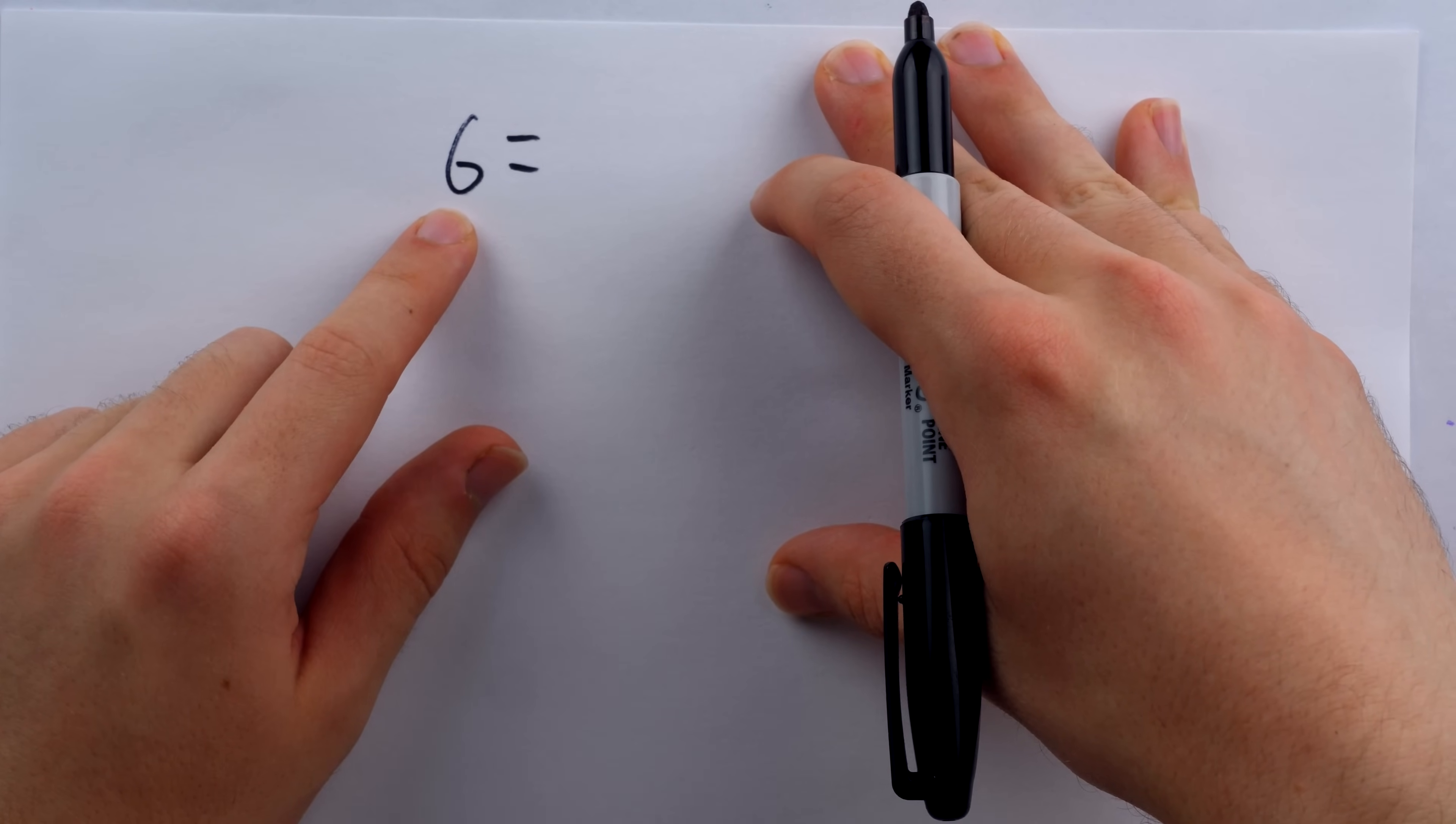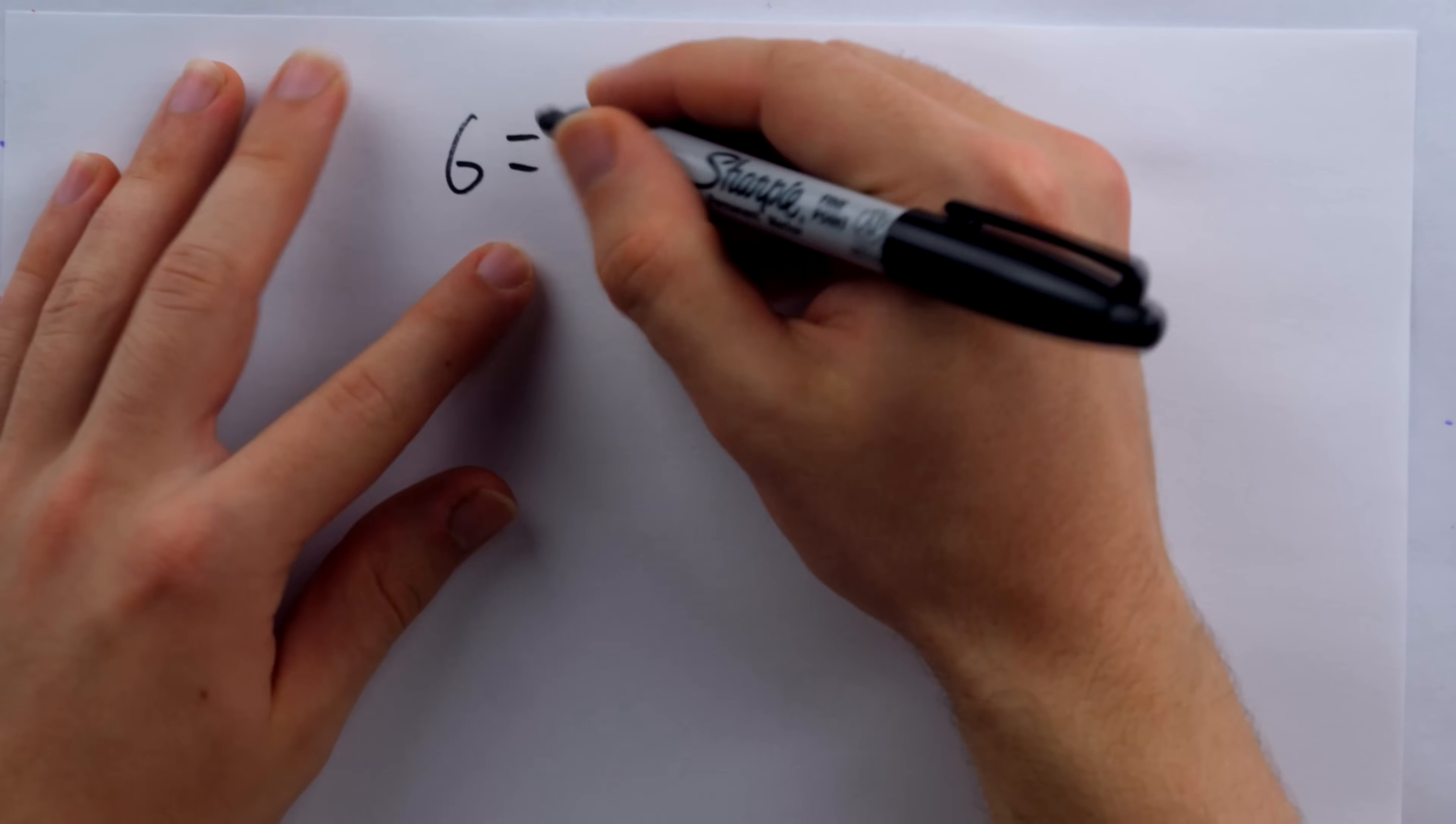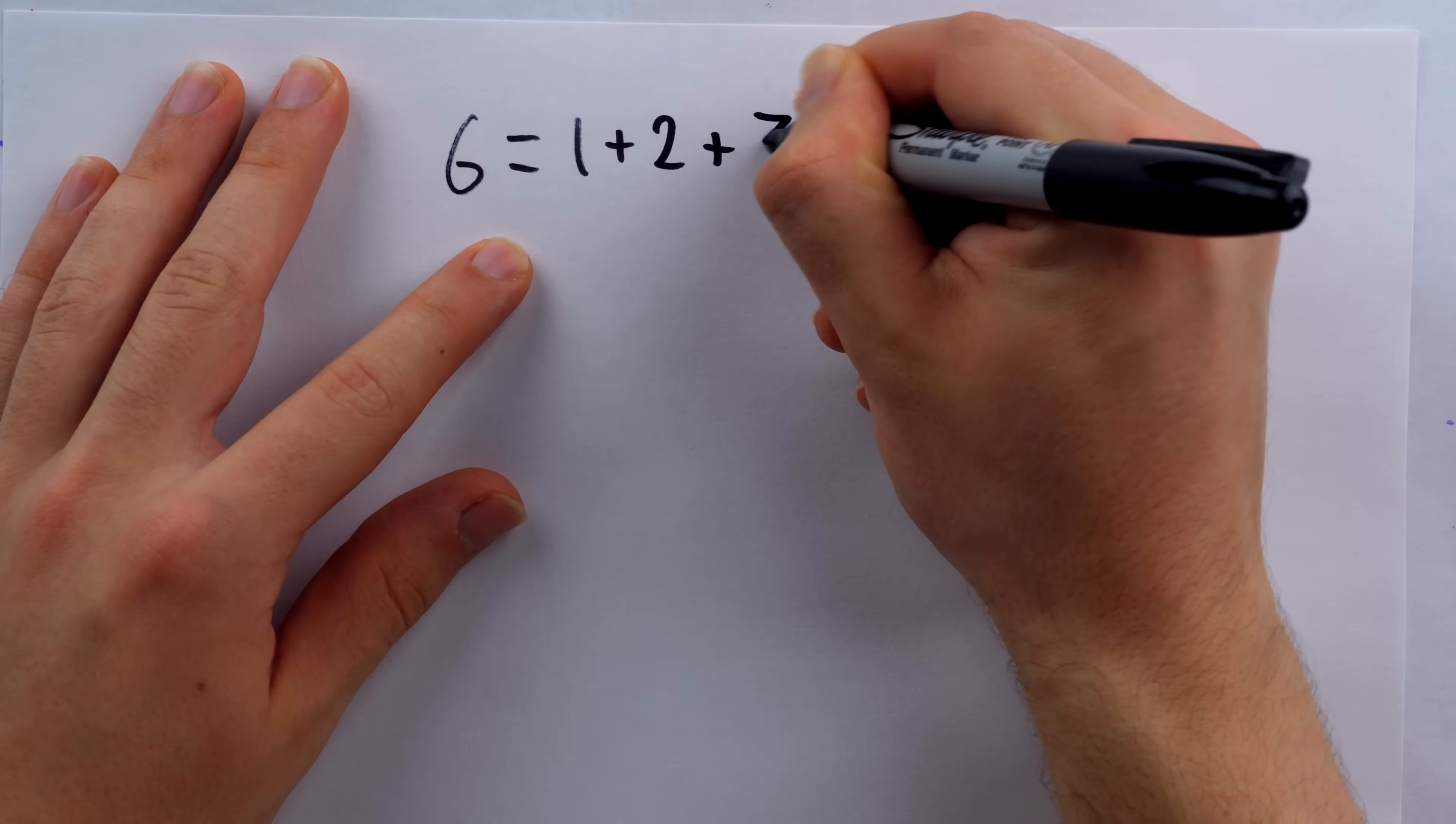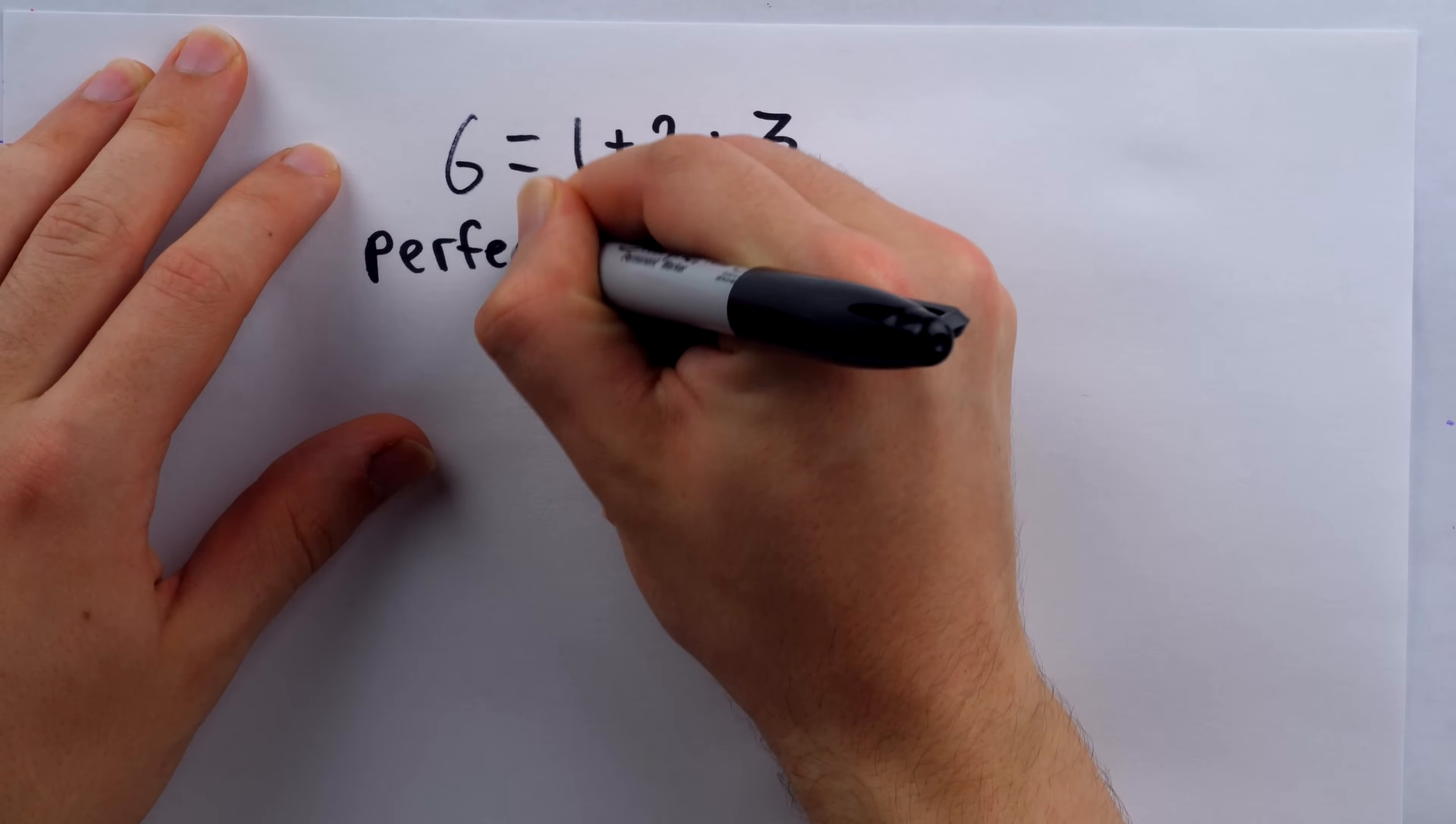We say that a number is perfect if it's equal to the sum of its proper divisors. The proper divisors of six are the divisors of six that are positive and not equal to six. So those numbers would be one, two, and three. Notice when we add those proper divisors, we get six. And that's why six is what's called a perfect number.